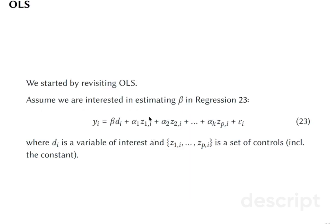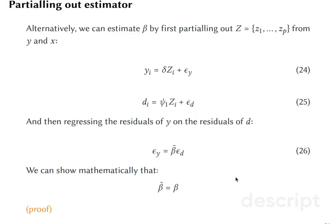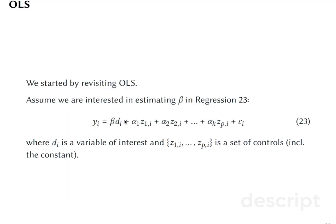We started by revisiting OLS. We said that any OLS can be also represented as a three-step process where we first regress our outcome variable on all the potential confounders, we get our residuals. Then we regress our treatment variable on other controls. So we partial out the control variables from our outcome variable and from our treatment variable into separate regressions. And then if we regress these residuals on these residuals, our beta coefficient would be exactly the same as the beta coefficient in our initial OLS regression.